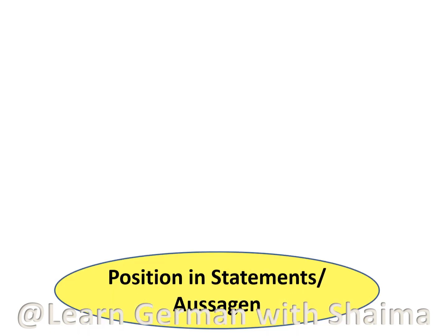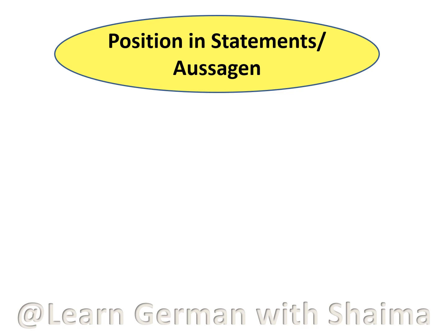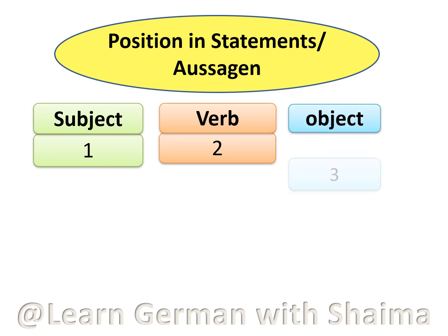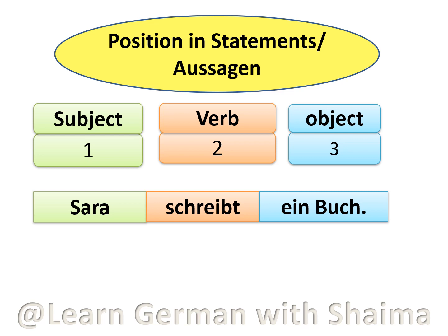Starting with the position in statements — in German, it is important to note that in a statement the subject always has the first position. It is followed by a verb, which is always in the second position, and then you have the object, which is always in the third position. So the basic rule for a statement is: subject plus verb plus object. For example: Sarah schreibt ein Buch. Sarah is the subject, therefore in the first position; schreibt is the verb, therefore in the second position; and ein Buch is the object, therefore at the very end.